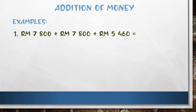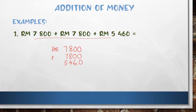We change this sentence into a mathematics sentence using the standard method. You must write it out, then write from right to left for the third number. Don't forget to write RM, and don't forget to write the plus sign. We add from right to left.